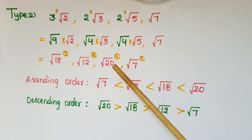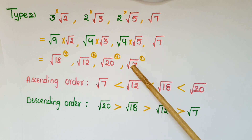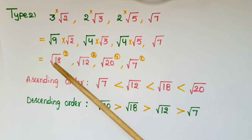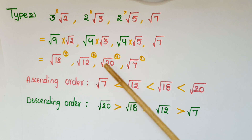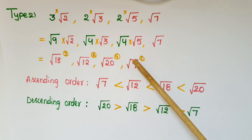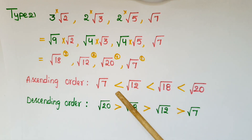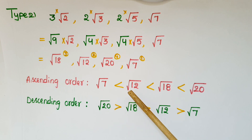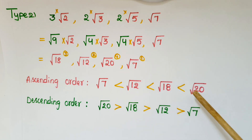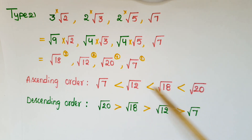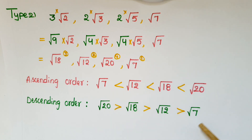So: 9 times 2 gives root 18, and 4 times 3 gives root 12, and 4 times 5 gives root 20, and root 7. Now all are square roots, so find the largest number — that is 20 — and the smallest is 7. Ascending order: root 7 < root 12 < root 18 < root 20. Descending order: root 20, root 18, root 12, root 7.